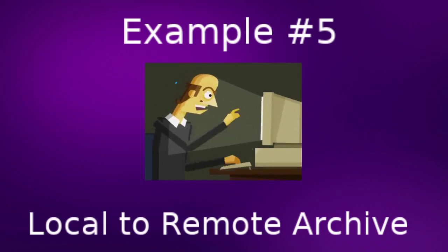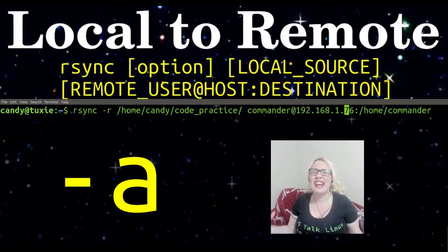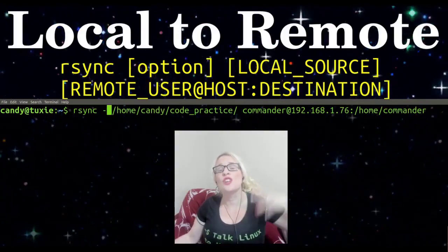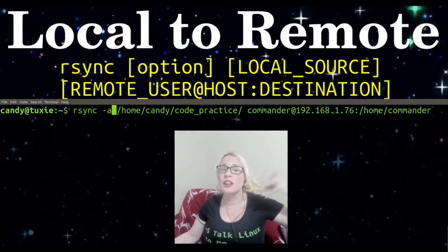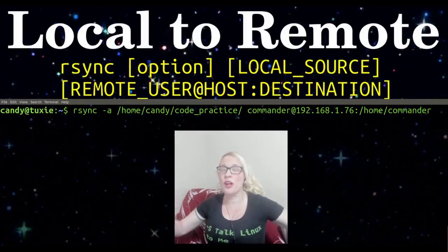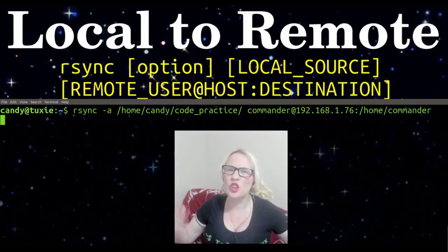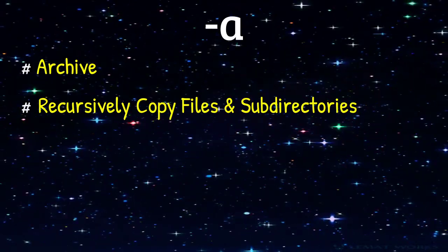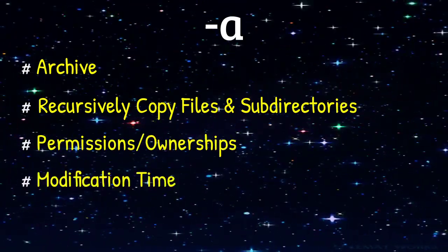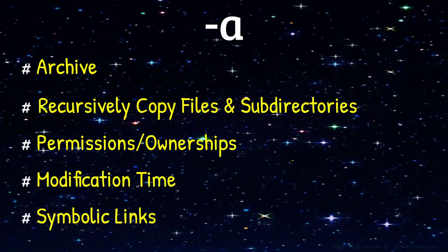Example five, local to remote archive. Dash a is similar to dash r in that it's also going to recursively copy any files or subdirectories within that directory, but it's going to do a few other things too. It's also going to copy over permissions and ownerships, modifications, time, and symbolic links.